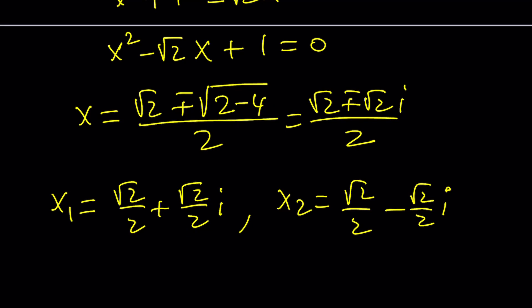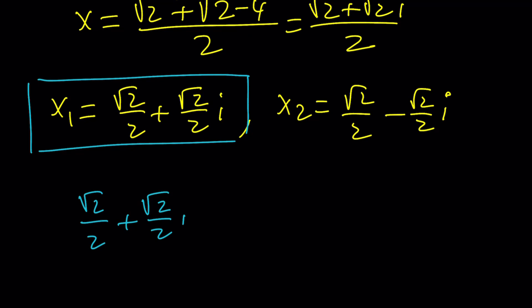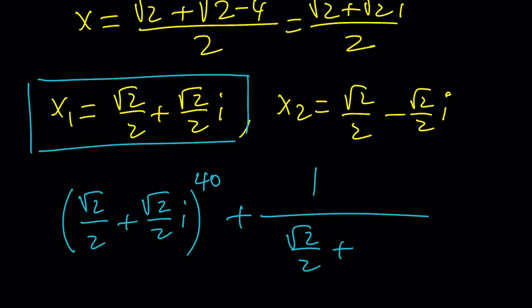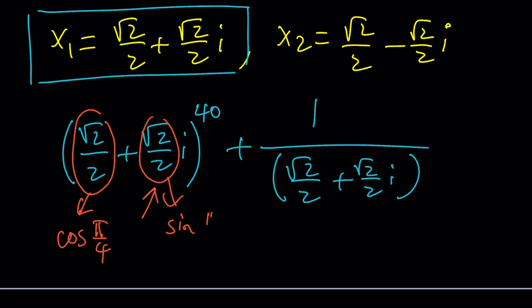So which solution are we going to use? It doesn't matter, so let's use this one. Now, I do need the 40th power of x. I hope you noticed that root 2 over 2 is a special number, especially from a trigonometry viewpoint. We can turn root 2 over 2 into cosine of pi over 4, and we can turn the imaginary part into sine of pi over 4. We want to write this as a complex number in polar form, which is going to be super helpful.